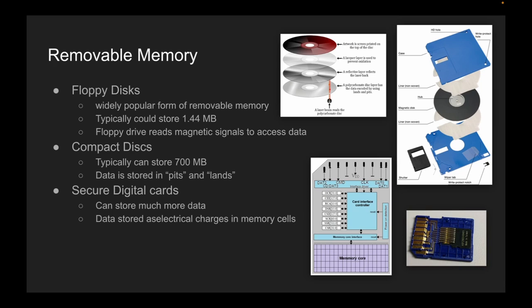A floppy disk is a thin magnetic storage medium enclosed in a square or rectangular plastic shell. The disk itself inside the hard case was flexible and bendable, which is why they were called floppy disks. The disk is coated with a magnetic material that can be magnetized or demagnetized to represent binary data. To write data to a floppy disk, the computer's floppy drive uses a read-and-write head to magnetize the disk surface in specific locations to represent binary data. To read data from the disk, the floppy drive reads these magnetic signals and converts them into digital data understood by the computer.